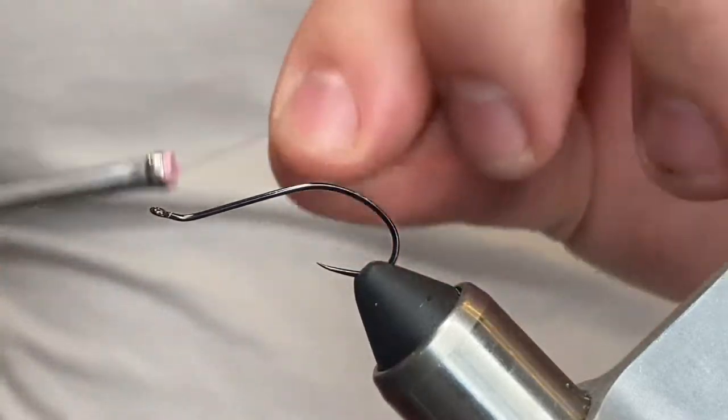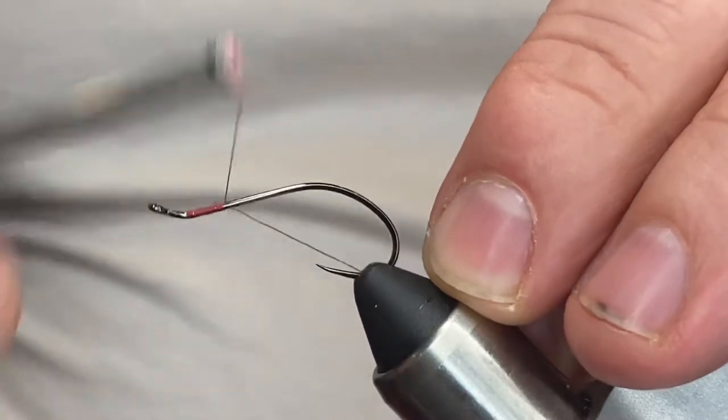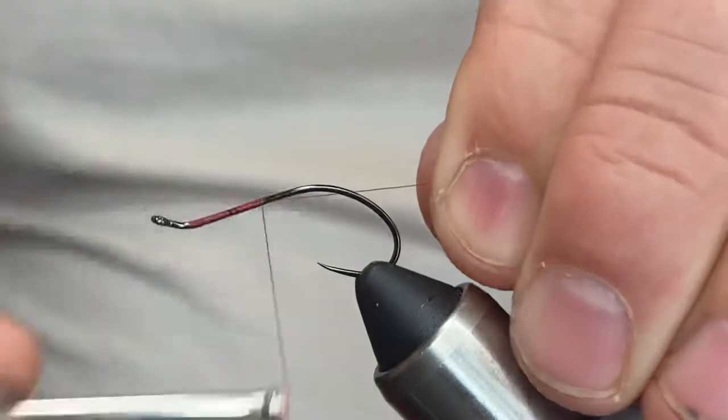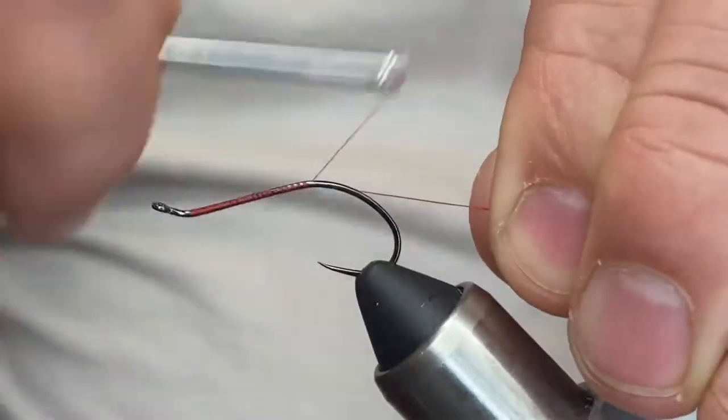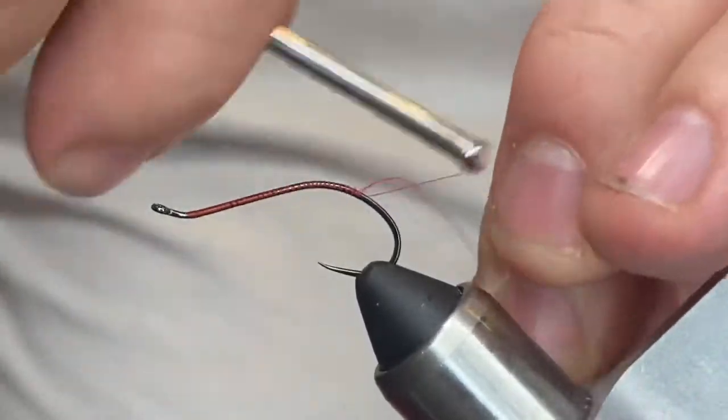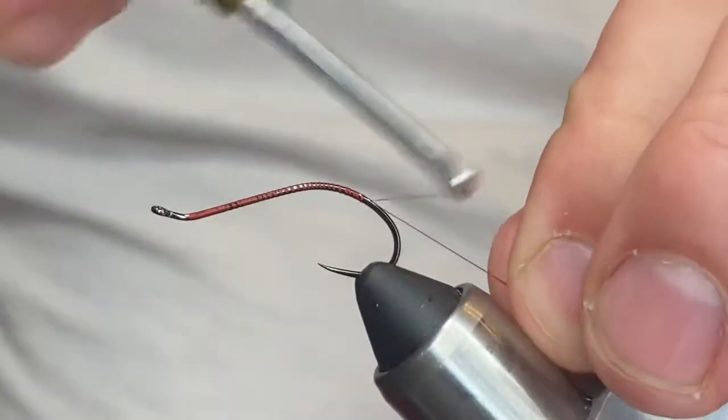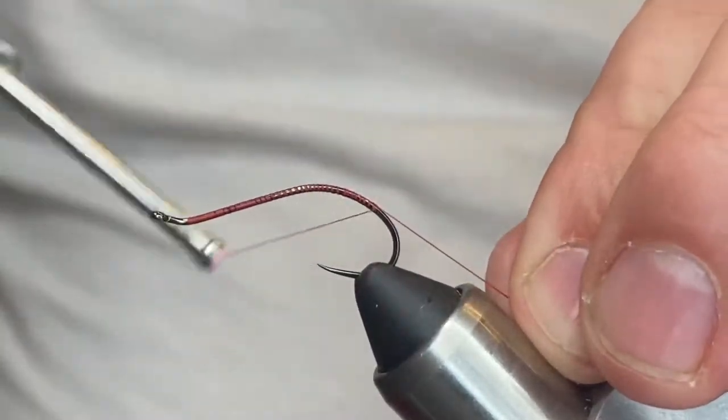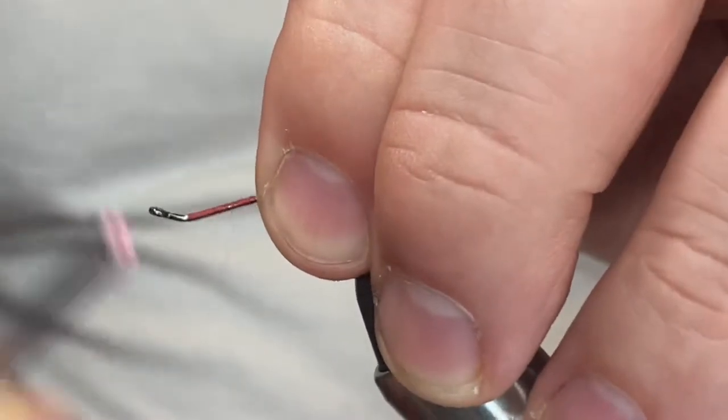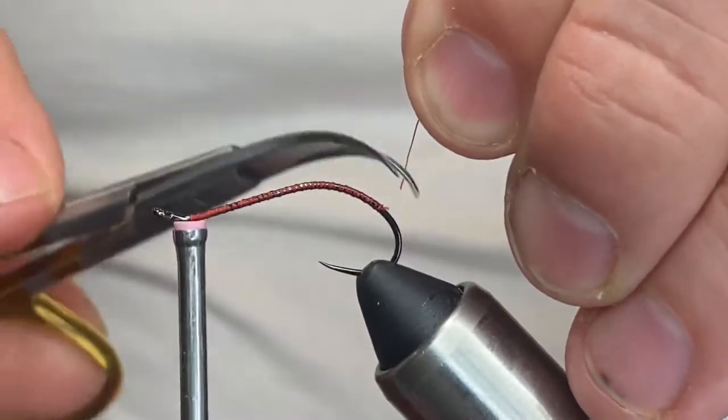We're going to come in and start our thread right behind the hook eye. The thread that we're tying with tonight is Uni-Thread in 70 denier red, of course. Get us a good base started, come back up to the tying point, and get rid of that tag.